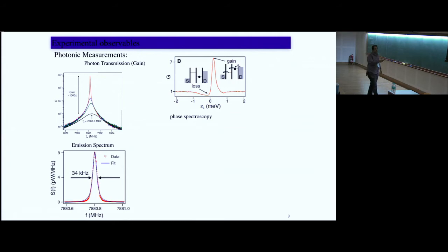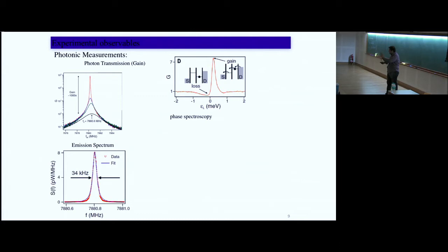You can measure something called the emission spectrum, which is related to the Keldysh Green's function. The output over input can be a complex number — so you get both amplitude (gain/loss) and phase response. You can also measure photonic statistics: thermal distribution corresponds to no lasing, while Poissonian distribution is the signature of lasing.